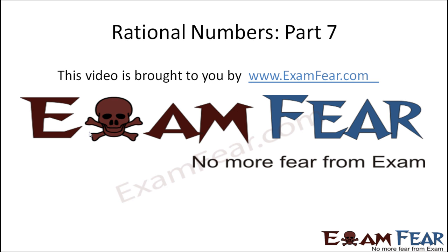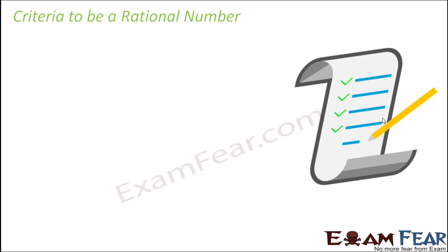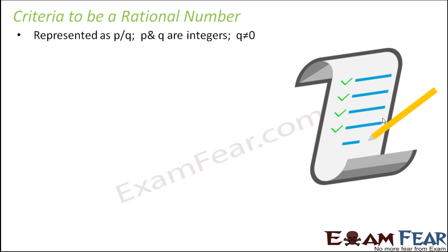Hello friends, this video on rational numbers part 7 is brought to you by examfear.com. By the end of this discussion, we will review what rational numbers are and the criteria that need to be fulfilled for any number to be called a rational number. A number should be representable as p by q, where p and q are integers and q is not equal to 0.